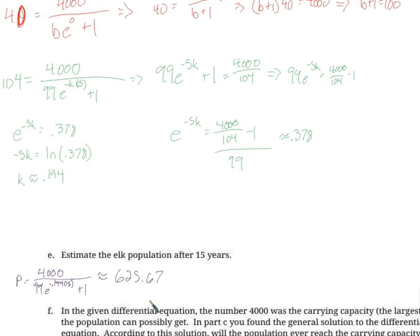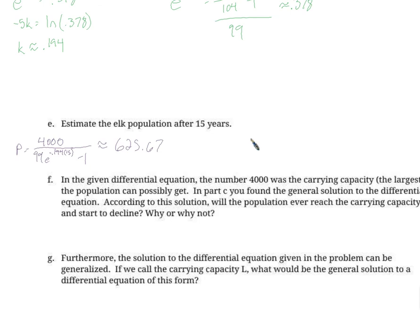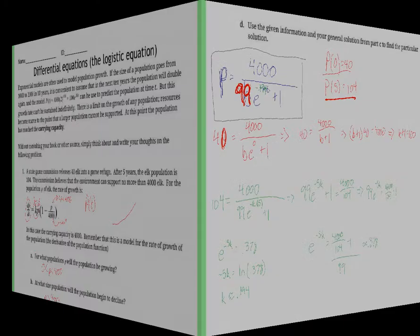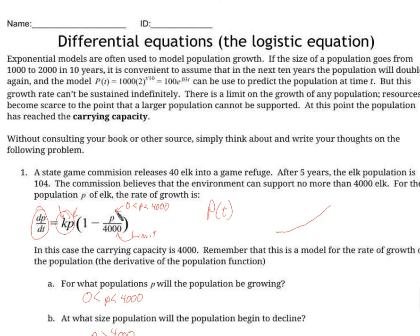So about 626 elk because you can't get 0.67 of an elk. We round up to 626. Given differential equation, 4000 carrying capacity, if we replaced, let's go all the way back. The differential equation here, replace this 4000 with just a big L.